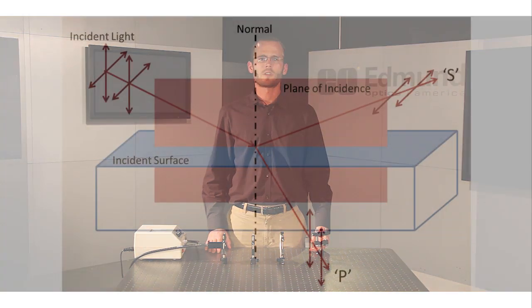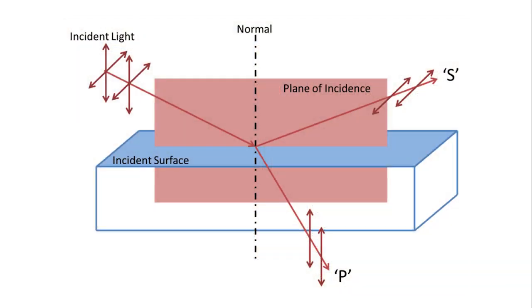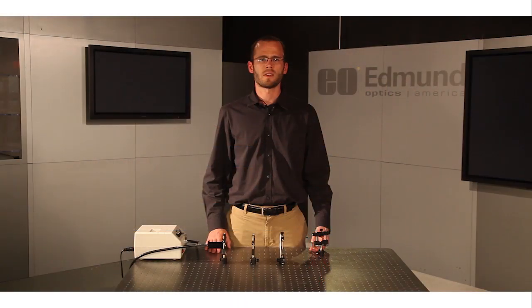These originate from the German terms for perpendicular and parallel, senkrecht and parallel. A common mnemonic for remembering the difference is to think p polarized as plunging into the surface, and s polarized as skipping off the surface of incidence.